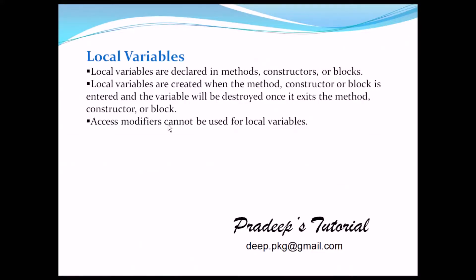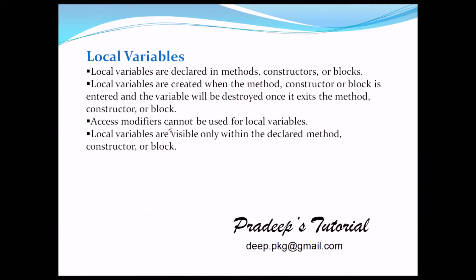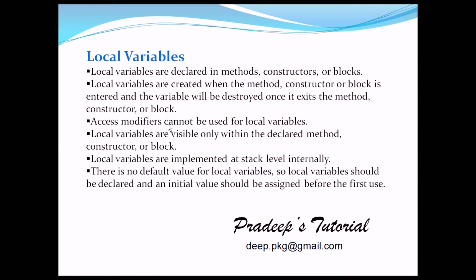Local variables are visible only within the declared method, constructor, or block, so there is no use of giving an access modifier. Local variables are implemented at the stack level internally — local variables always go to stack memory, which we'll discuss in the next chapter. There is no default value for local variables; a local variable must be declared and an initial value assigned before the first use.